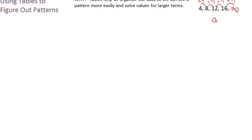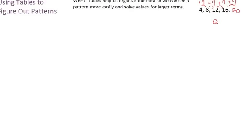But if my question was to solve for the 72nd term, I'm not going to keep going plus 4, plus 4... 72 times. That's just really long, you can make a lot of mistakes along the way, and it's going to take way too long. So I'm going to use a table of values to help shorten up this problem and make it a lot quicker, easier, and less prone to mistakes.